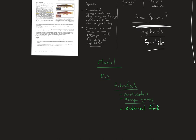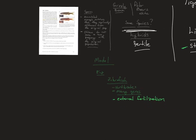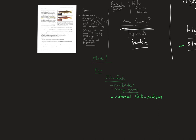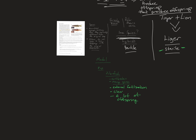Interestingly, zebrafish have external fertilization, which means it's easy to manipulate which egg finds which sperm because it happens outside the body. The male fish lays sperm in the water and fertilization occurs externally. The embryos are clear, so it's easy to see them develop and identify structures. They also produce a lot of offspring at once and mate often.